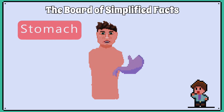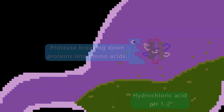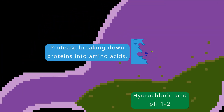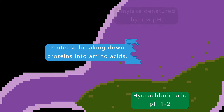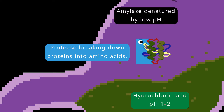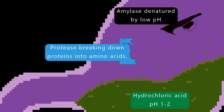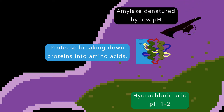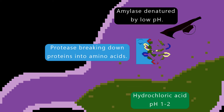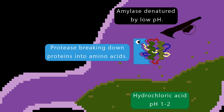The food then enters the stomach where proteases are secreted, so proteins are broken down here. The amylase from the saliva, if it makes it to the stomach, denatures because the pH in the stomach is around 1 to 2 due to the presence of hydrochloric acid.